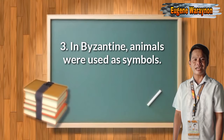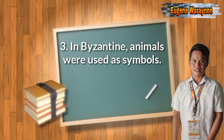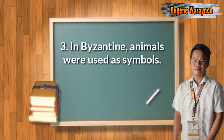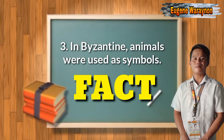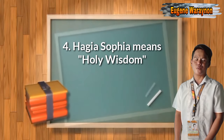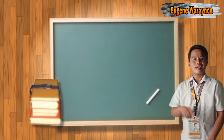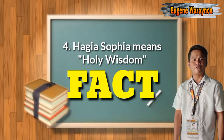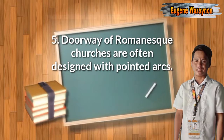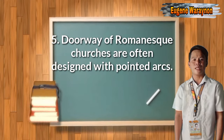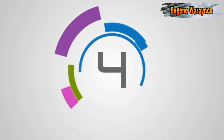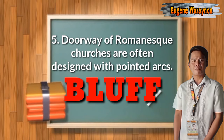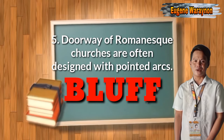Number 3: In Byzantine, animals were used as symbols. Is it a fact or bluff? Yes, it's a fact. Number 4: Hagia Sophia means holy wisdom. Is it a fact or bluff? It is a fact. Number 5: Doorways of Romanesque churches are often designed with pointed arcs. Is it a fact or bluff? Bluff. Because Romanesque churches incorporate semi-circular arches for windows and doorways.